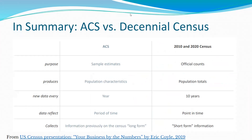Summary comparison: the census is official counts - every single person. ACS is sampling. The decennial only has basic population data; all detailed information is available through the ACS only. ACS provides annual data or five-year data for smaller places. The decennial is a point-in-time count (April 1st), while ACS covers a period of time. The 2020 census collection was impacted by COVID.